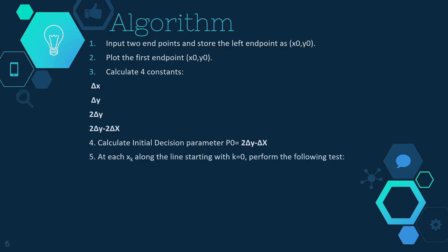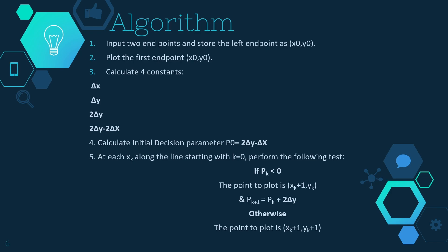At each xk along the line starting with k equal to 0, perform the following test. If the decision parameter pk is less than 0, the next point to plot becomes xk+1, yk — you do not increment the y coordinate, and the next decision parameter is pk+1 = pk + 2 delta y. If pk is greater than or equal to 0, increment both x and y coordinates by 1, and the next decision parameter is pk+1 = pk + 2 delta y minus 2 delta x.